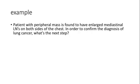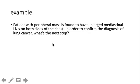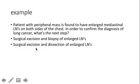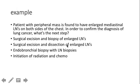Example: peripheral mass — probably adenocarcinoma — with enlarged mediastinal lymph nodes on both sides of the chest. That sounds like stage three. Should you take out the mass and biopsy the lymph nodes? Probably not — the treatment for stage three lung cancer is chemo and radiation, not surgery. The best answer would be bronchoscopy with biopsy of the lymph nodes on both sides to confirm stage three disease.